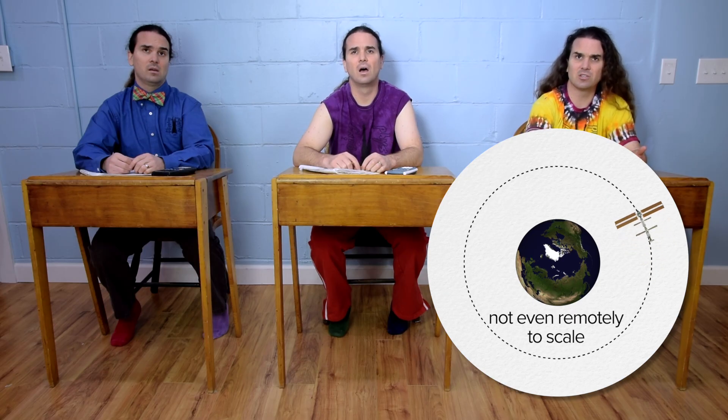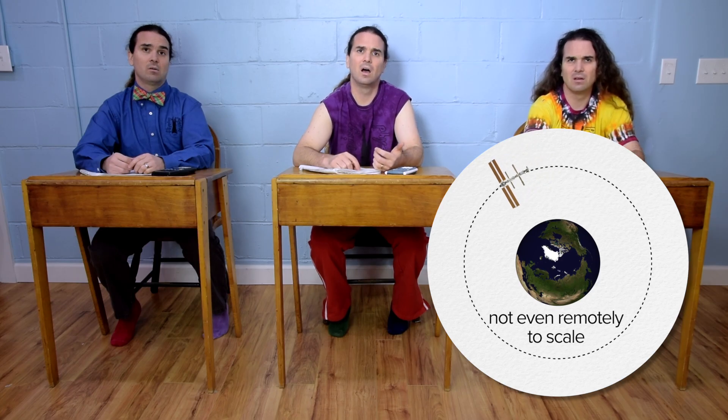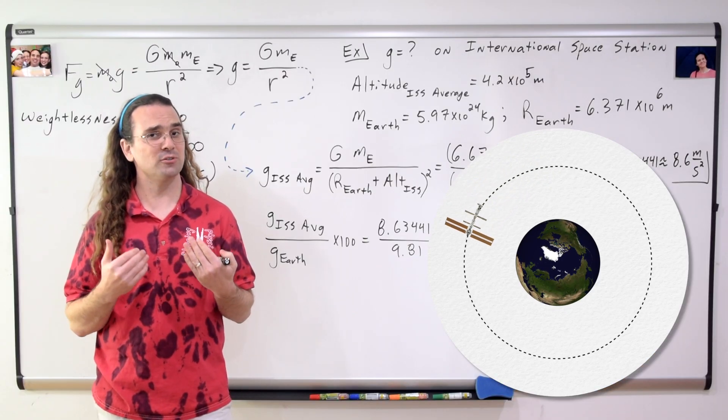If the International Space Station is falling toward the Earth at 8.6 meters per second squared, why does it not run into the Earth? What is the direction of the acceleration of the International Space Station? The 8.6 meters per second squared is the centripetal acceleration that keeps the International Space Station moving in a circle around the Earth. In other words, the International Space Station may be falling toward the Earth, but it also has an inertia which is trying to keep it moving tangentially in a straight line. That is what keeps it in orbit around the Earth.